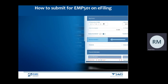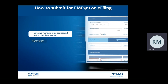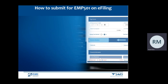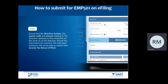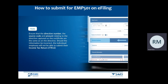Complete the directive numbers issued by SARS. Directive numbers must correspond to the directives issued, and 9999999 and 00000 numbers are not allowed. Ensure that the directive number, the source code, and the amount relating to the directive captured on the certificate are the same as on the directive. Should the information be incorrect, the individual or employee will not be able to submit their income tax return, ITR12.